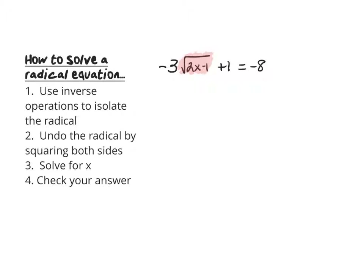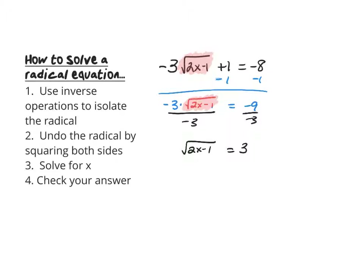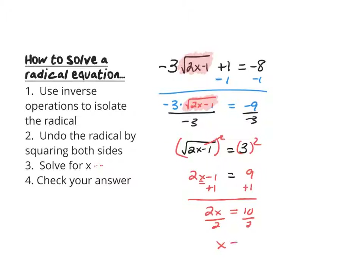So we undo addition and subtraction first — we undo the plus 1 with a minus 1 to both sides. When we rewrite that, we still have negative 3 times the square root of 2x minus 1, equal to negative 9. We don't want the square root multiplied by negative 3, so our next step is to divide both sides by negative 3. Now we have the square root of 2x minus 1 all by itself, equal to 3. We square both sides to undo the square root, giving us 2x minus 1 equals 9. We add 1 to both sides, then divide by 2 to get x alone, giving us x equals 5.